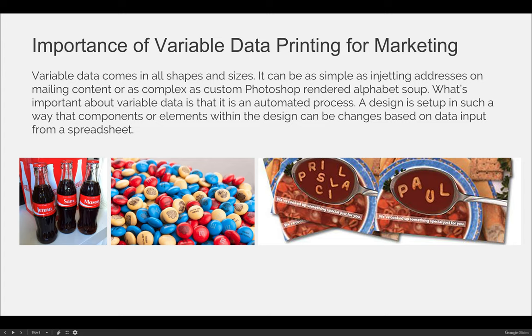Variable data comes in all shapes and sizes. It can be as simple as inkjetting addresses on mailing content, or as complex as a custom Photoshop-rendered alphabet soup. What's important about variable data is that it is an automated process. A design is set up so that components or elements within the design can be changed based on data input from a spreadsheet — an Excel spreadsheet.